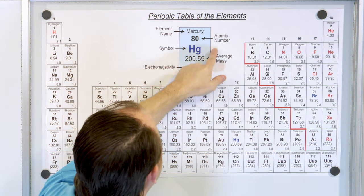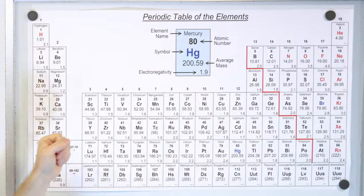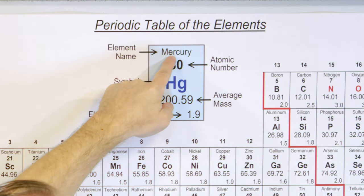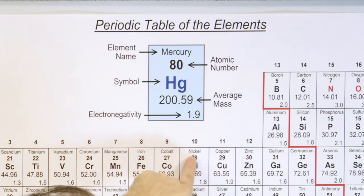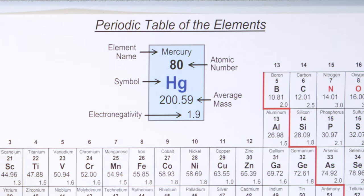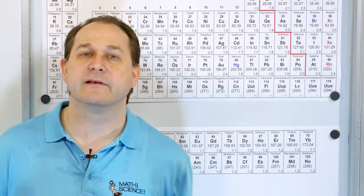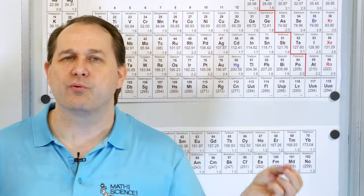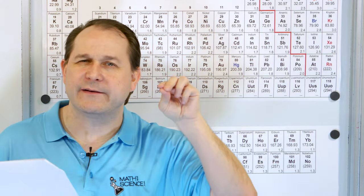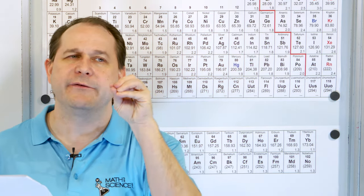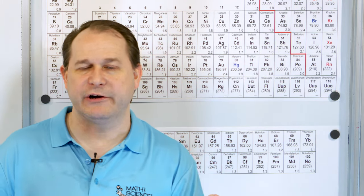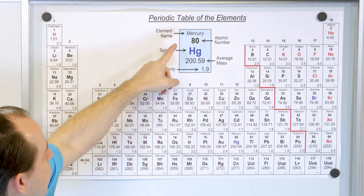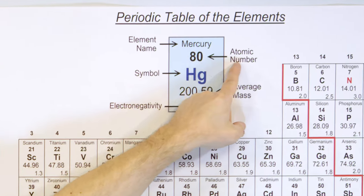Here's a close-up of what one of these squares looks like. In every square we have the name — in this case it's Mercury — and underneath that in bold we have the atomic number. The atomic number is how many protons exist in the nucleus of the atom. The atomic number is what makes all of these elements different; the number of protons in the nucleus defines the character of the element. Mercury, for instance, has 80 protons in its nucleus.